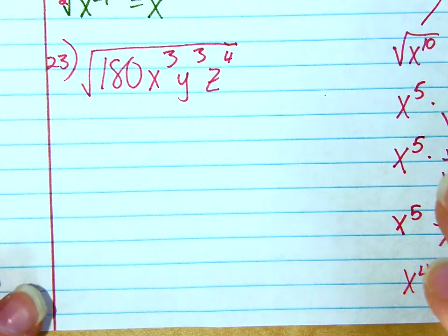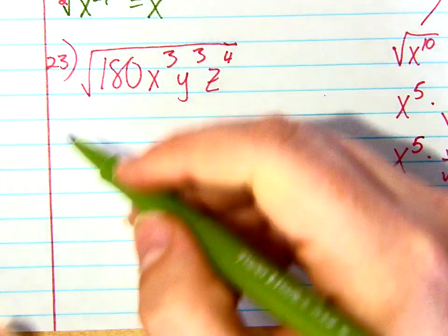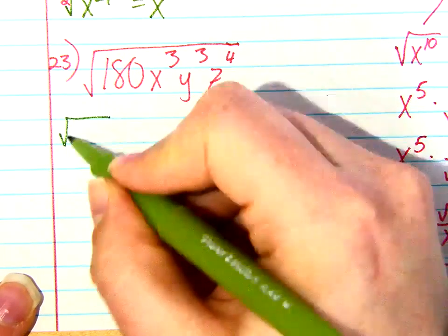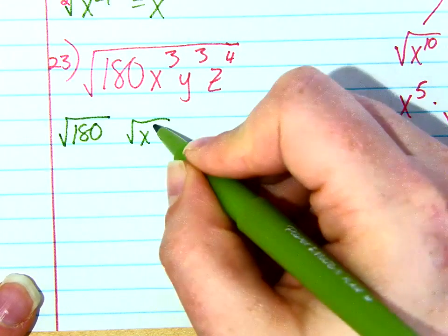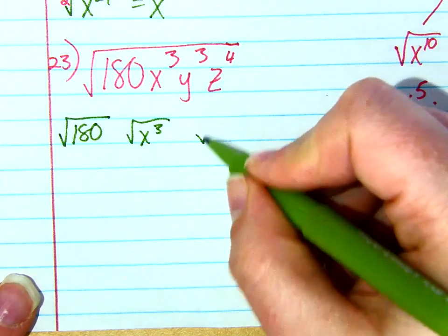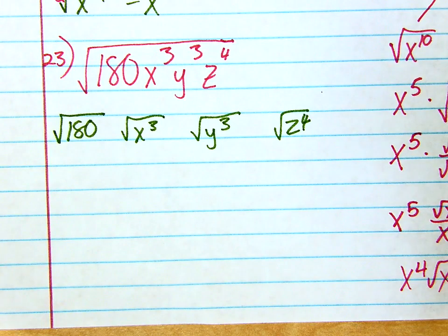So here's what I recommend that you do. When you have numbers and variables all under one big square root, just break them all up so they're all separate. So I'm going to deal with the square root of 180 all by itself. I'm going to deal with the square root of x to the third all by itself. I'll deal with the square root of y to the third by itself and the square root of z to the fourth. It's really just four mini problems all thrown together. So now I just have to deal with each one by themselves.